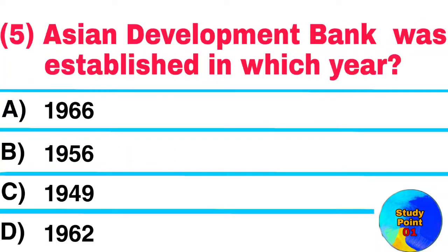Question No. 5. Asian Development Bank was established in which year? Answer: 1966.